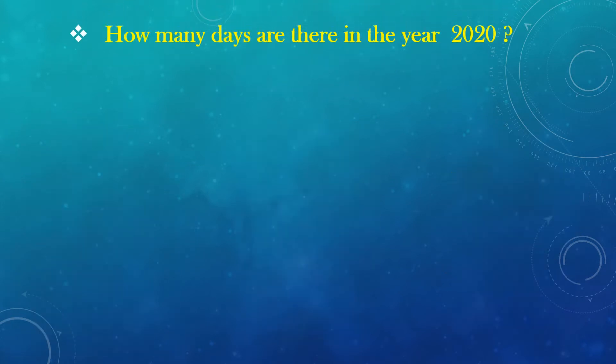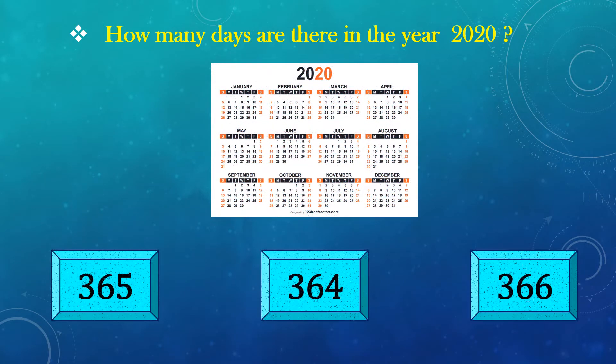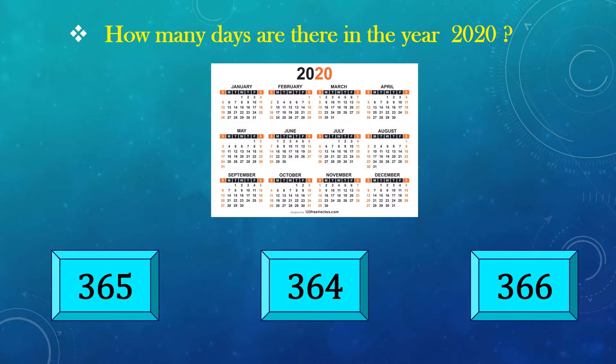How many days are there in the year 2020? The answer is 366 days.